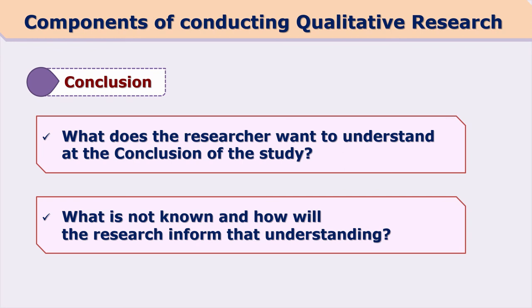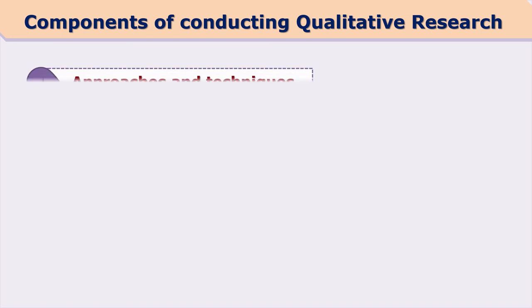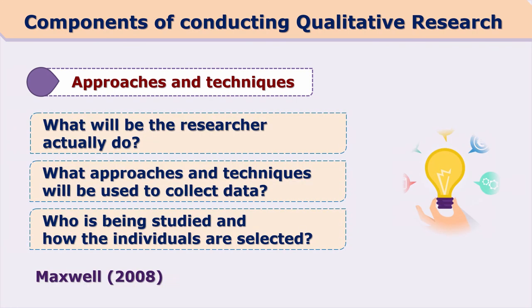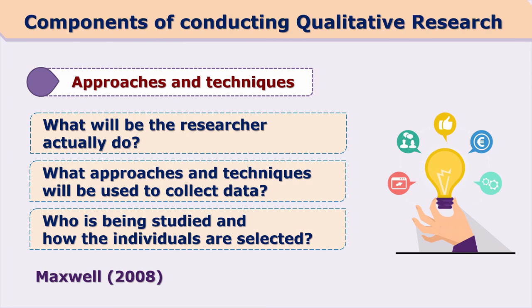What does the researcher want to study as a conclusion of the study? What is not known and how will the research inform that understanding? The researcher conducts qualitative analysis because he or she wants to find out some conclusions and findings. Goals are decided, conclusions are sought, and for that we need to design some techniques in a particular context. These research strategies, approaches, and techniques are important components of qualitative research.